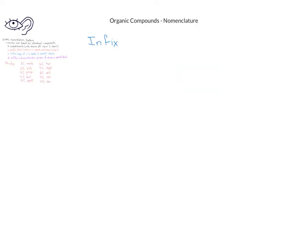The infix reveals the type of carbon-carbon bonds. If all the carbon-carbon bonds are single bonds, we use the infix -an-. If there's at least one carbon-carbon double bond, we use the infix -en-. And if there's at least one carbon-carbon triple bond, we use the infix -yn-.